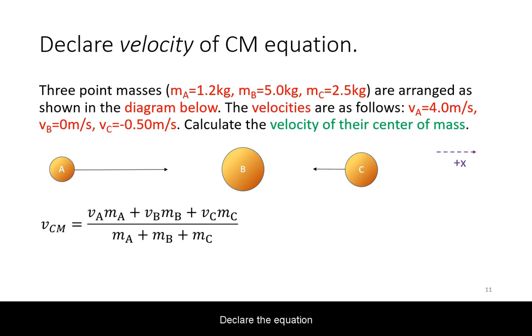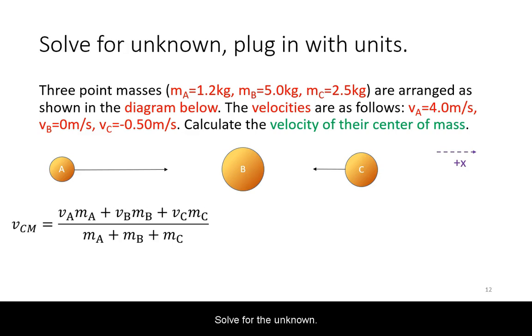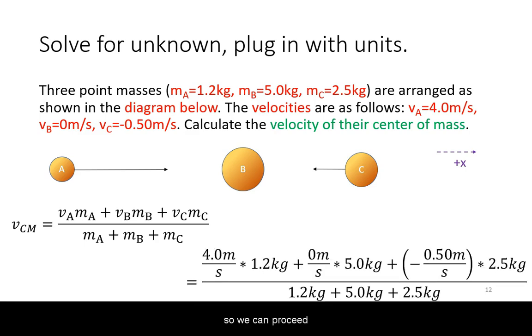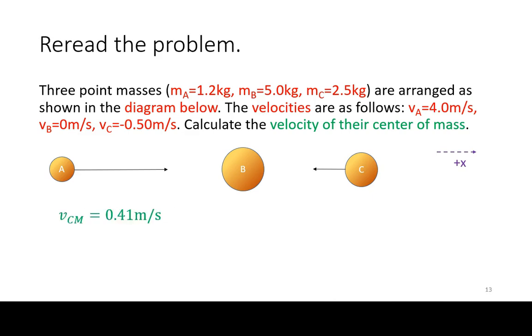Declare the equation for the velocity of the center of mass. Solve for the unknown. In this case, the unknown is the velocity of the center of mass, so we can proceed plugging in with units. Once you have an answer, reread the problem and check against the picture you drew.